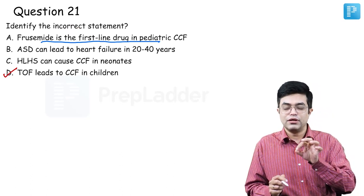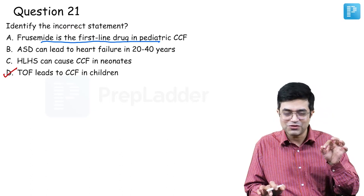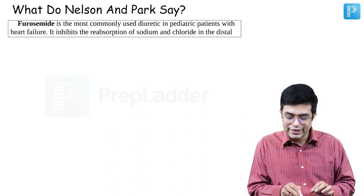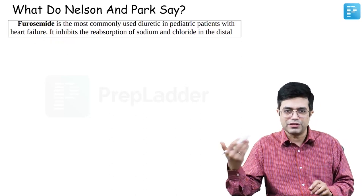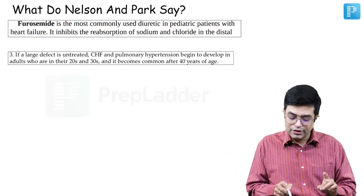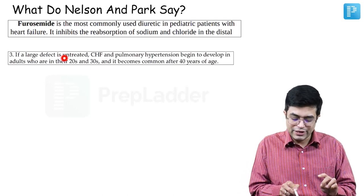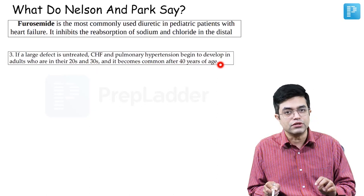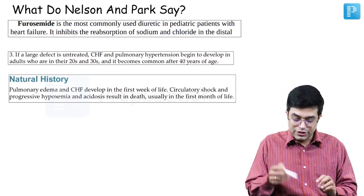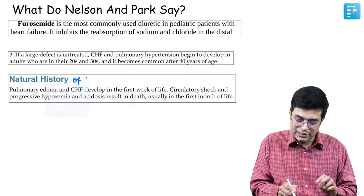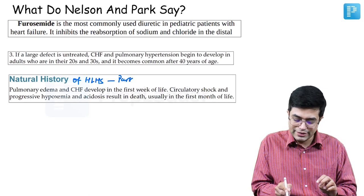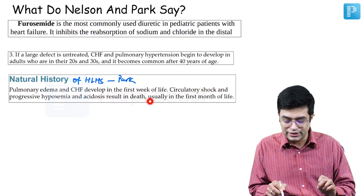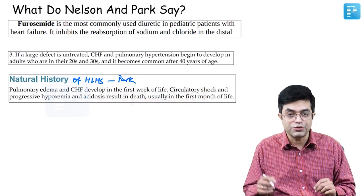TOF is the condition with least risk of CCF, followed by atrial septal defect — an old teaching point. CCF can develop in TOF only in additional pathological conditions such as high-grade fever, aortic regurgitation, thyrotoxicosis, AV fistula, or other hyperdynamic states. By itself, TOF does not cause CCF in children. Nelson confirms furosemide as most commonly used diuretic; Park confirms ASD leads to CHF in adults in their 20s and 30s, common after 40; and Park confirms hypoplastic left heart syndrome causes CHF in first week of life. So D is the incorrect statement and the answer.